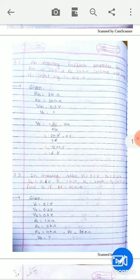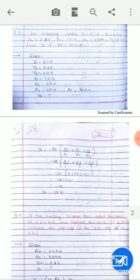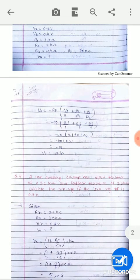The other problem is inverting adder. Given V1, V2, V3, and R1, R2, R3. Vo is equal to minus, V1 upon R1, plus V2 upon R2, plus V3 upon R3.